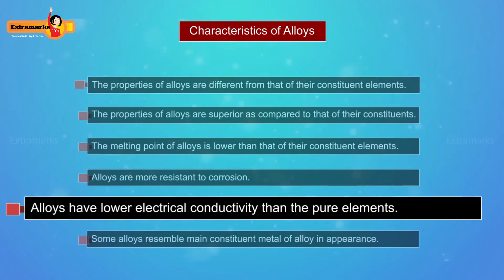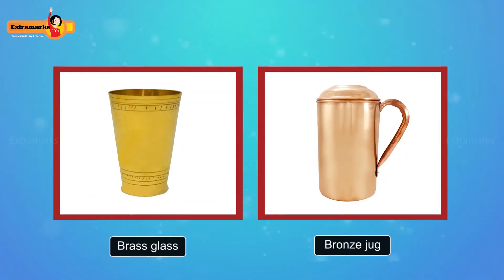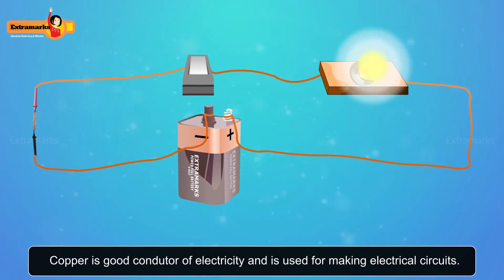Alloys have lower electrical conductivity than pure elements. For example, brass and bronze are alloys of copper and are not good conductors of electricity, whereas copper itself is a good conductor of electricity and is used for making electrical circuits.